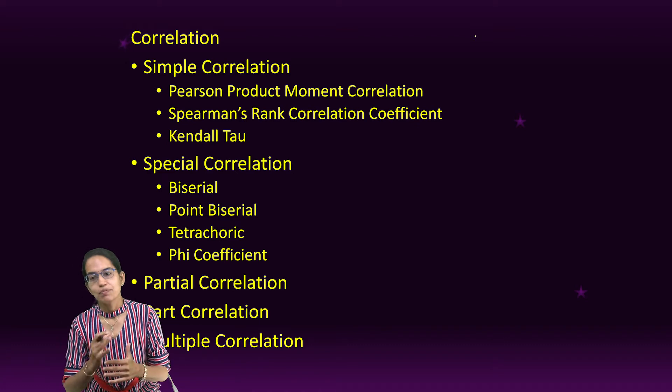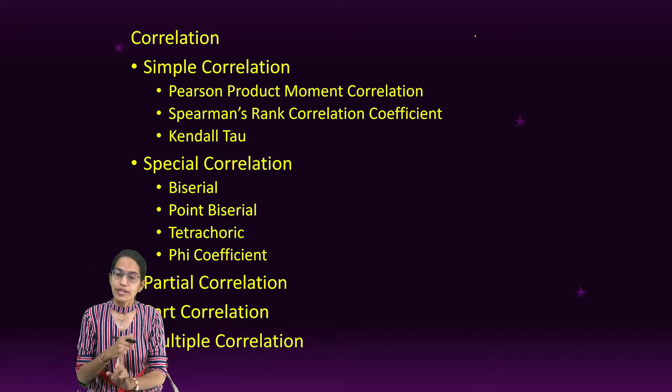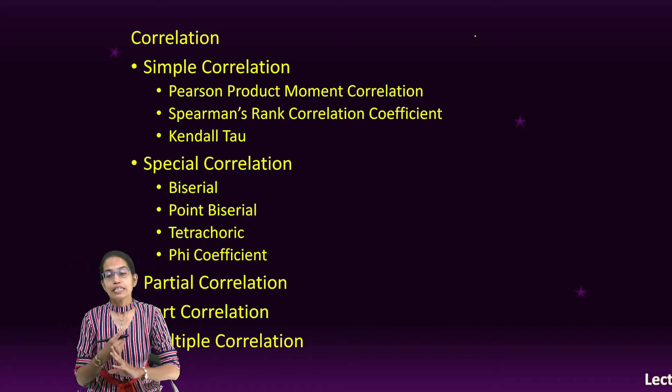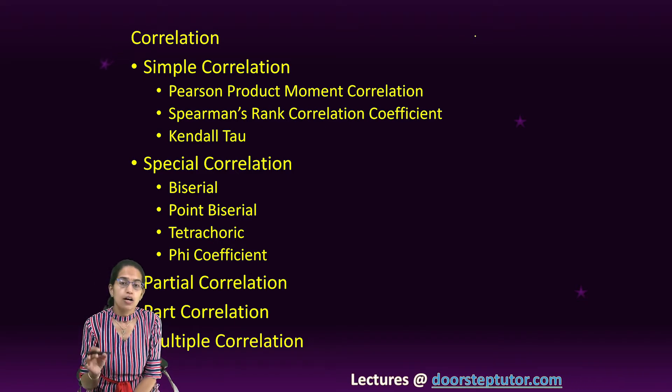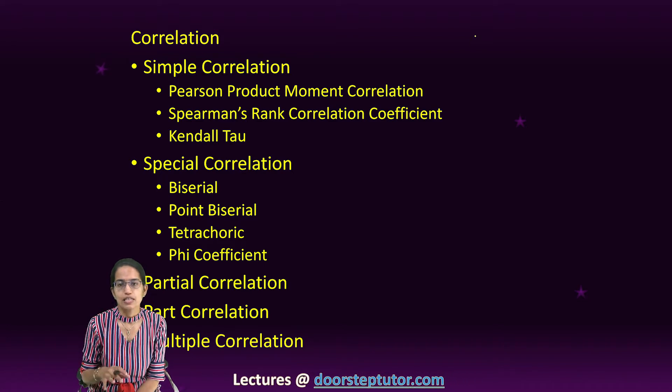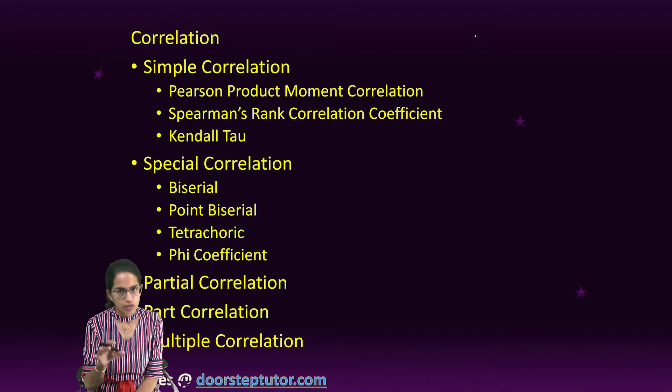As we have understood in the previous class, when there are two quantitative variables, we can have scatter plot, correlation, and regression as the common methods of statistics. Now amongst those, in this lecture we would focus only on correlation.